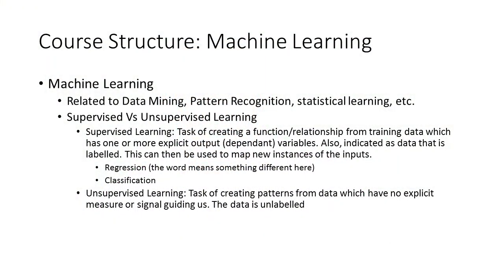We now move on to unsupervised learning. Unsupervised learning is the task of creating patterns from data which have no explicit measure or signal guiding us — in other words, there is no single variable we can call the output variable. People say the data is unlabeled. With supervised learning there is an explicit output variable; with unsupervised learning there is not one or two variables you can point to as output versus input. With unsupervised learning, you just have variables.